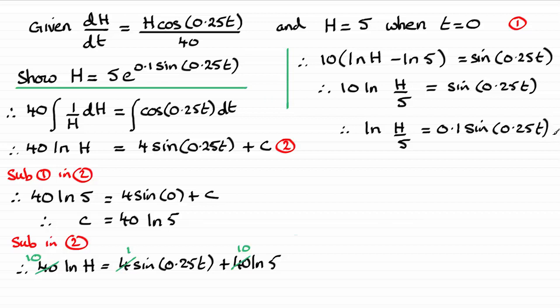Now at this stage we need to take the inverse log of both sides, anti-log both sides if you like. And that leaves us with H over 5 equals e to the power 0.1 sine of 0.25t.